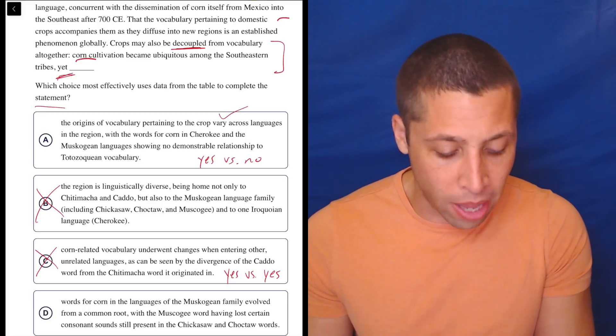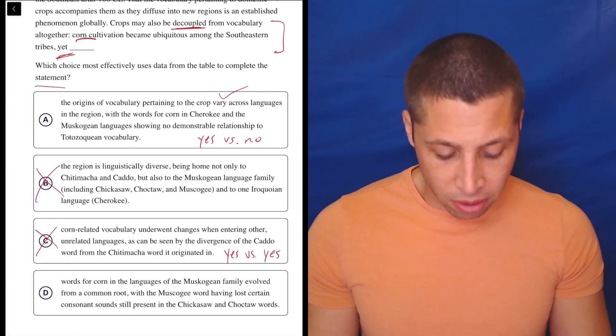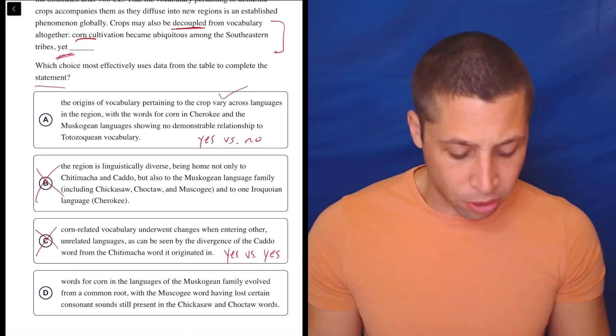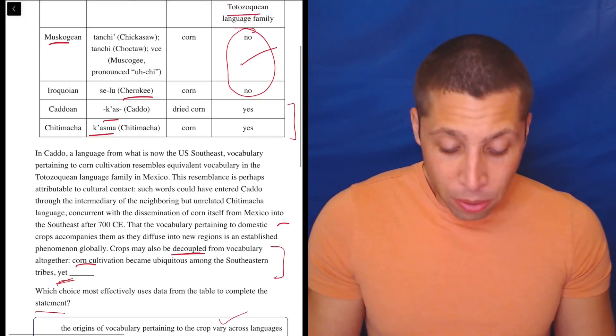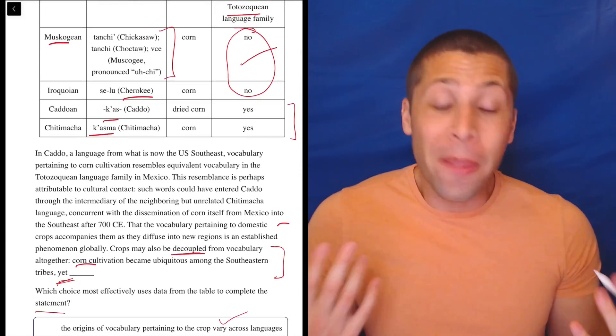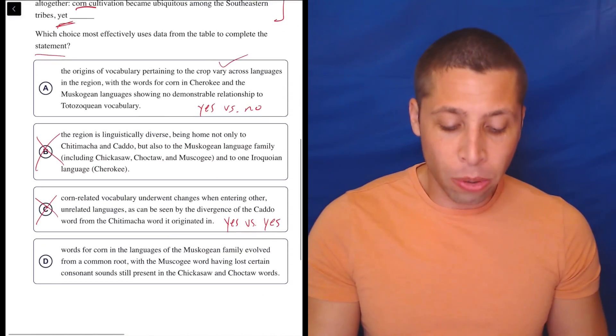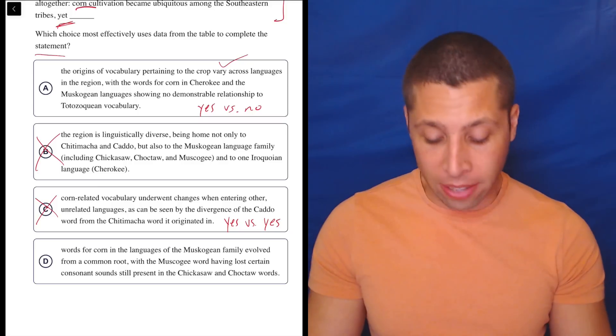This is kind of more in line with what I expect. So let's look at D. Words for corn in the languages of the Muscogean family evolved from a common root, with the Muscogee word having lost certain consonant sounds still present in the Chickasaw and Choctaw words. This is, again, I don't know what this means. These are just letters. I don't know. I'm not an expert.